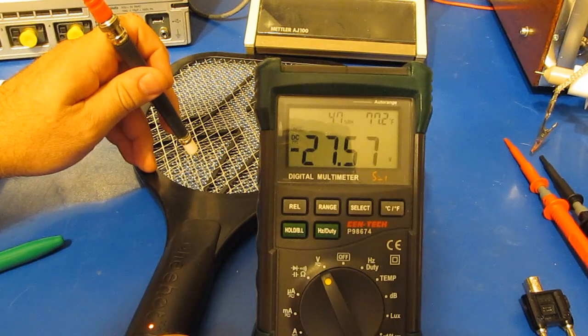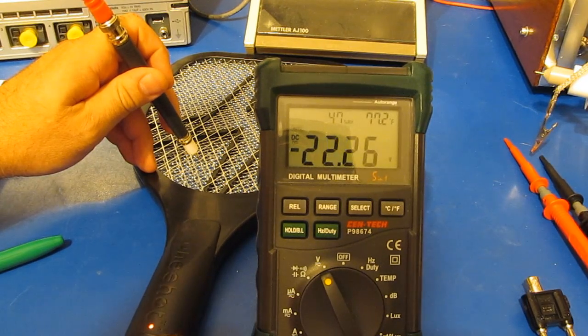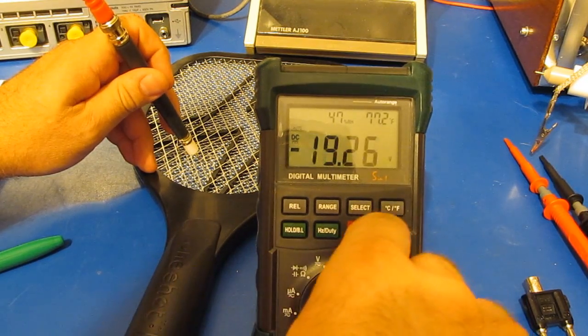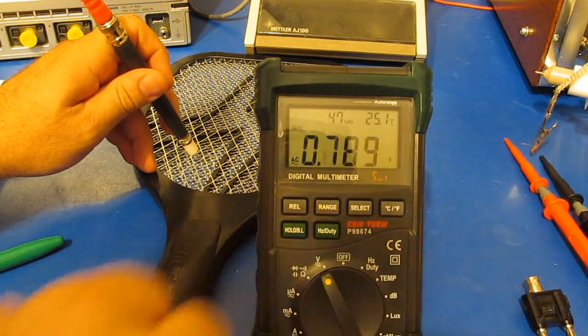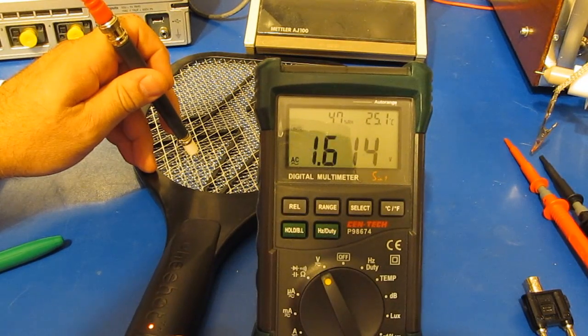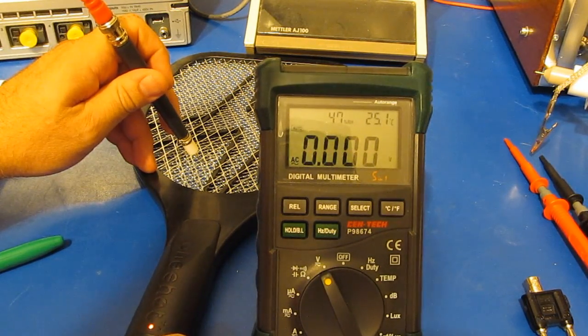See it decays a little bit. What I'm going to do is just select AC volts and you can see it has no AC content, which I wouldn't expect it would have.